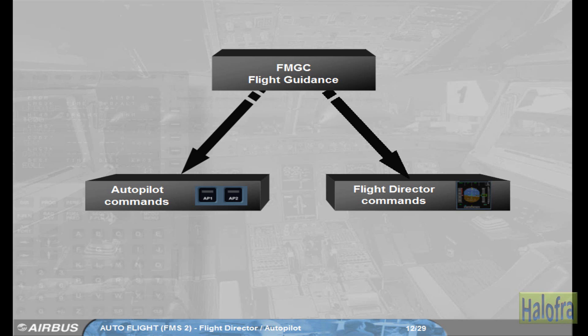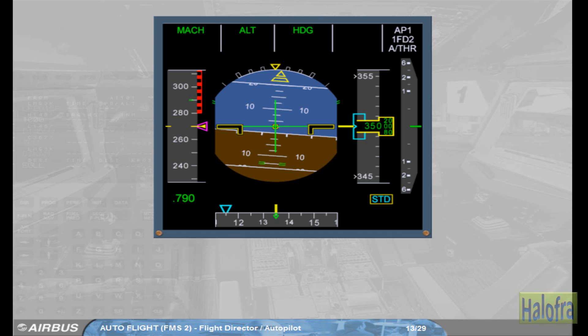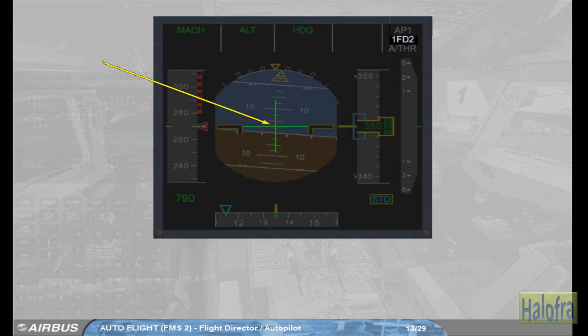These orders are materialised by specific symbols, such as crossbars. The flight director symbols are displayed on either PFD. The symbols on PFD1 are driven by FG1, and those on PFD2 are driven by FG2. The engagement status of the flight director is indicated on the FMA.